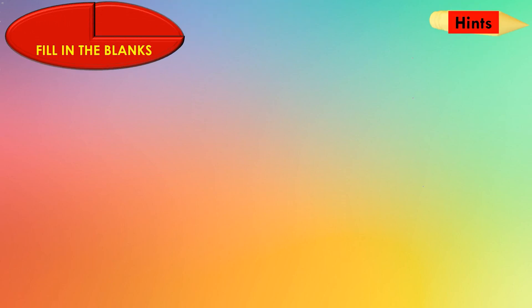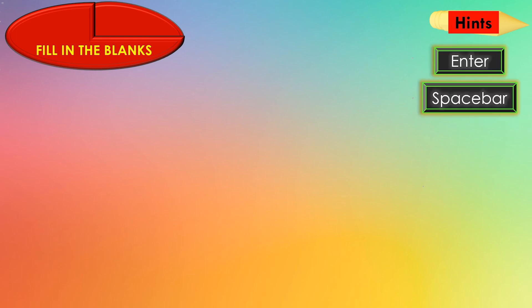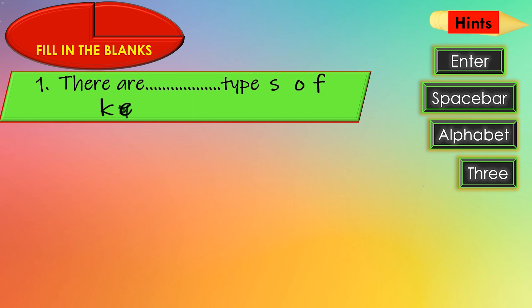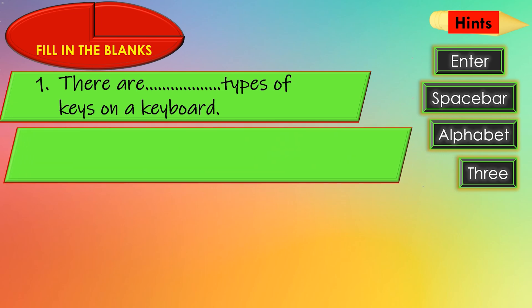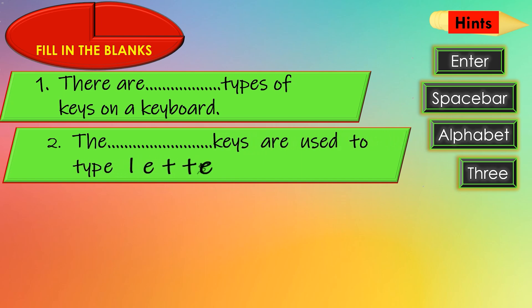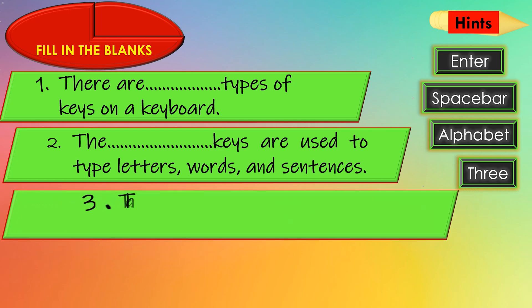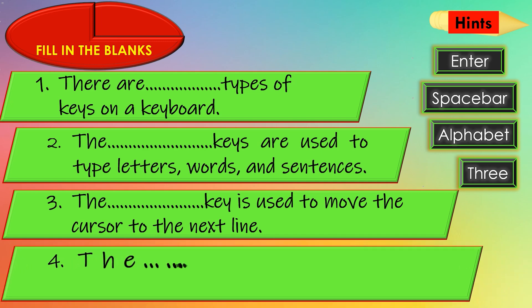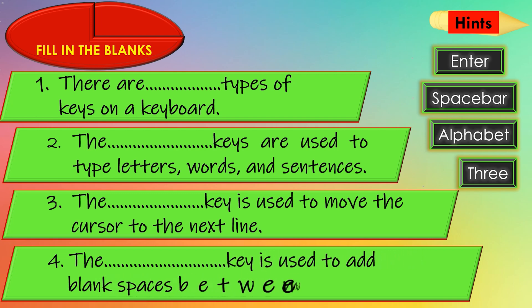Fill in the blanks. Here are some hints — Enter, Spacebar, Alphabet. Number one: there are blank types of keys on a keyboard. Number two: the blank keys are used to type letters, words, and sentences. Number three: the blank key is used to move the cursor to the next line. Number four: the blank key is used to add blank spaces between words.